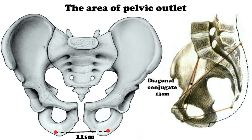The diagonal conjugate is the distance from the inferior margin of the symphysis to the most protruding point of the sacral bone promontory. It is measured by means of vaginal examination and measures 13 cm on average.